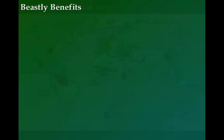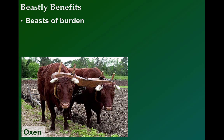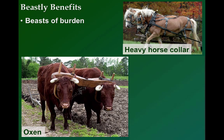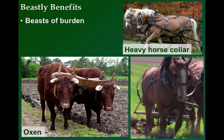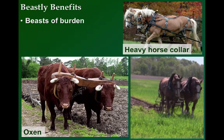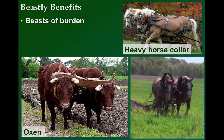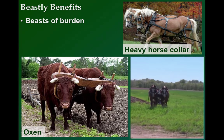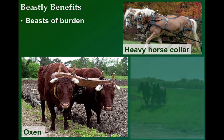Many of the animals that made their way into Europe were used as beasts of burden, such as oxen. Even more productive were horses, who could pull plows much faster and could be ridden much more efficiently. The heavy horse collar diffused from China to Europe around the 8th or 9th century. It transferred weight to the shoulders of the horse, preventing choking and enabling the tilling of the more rocky soils found in Europe.